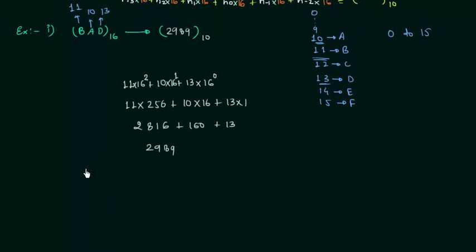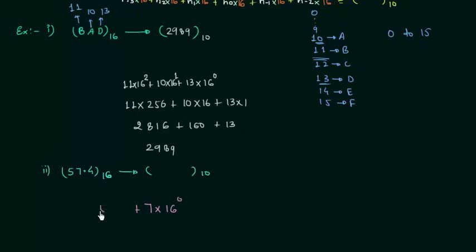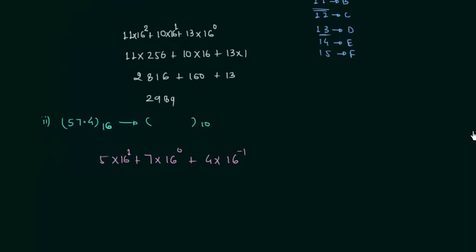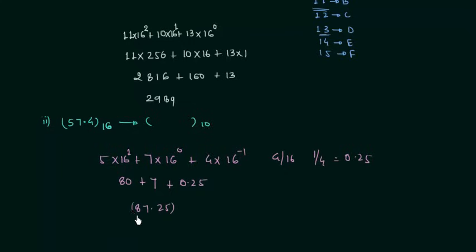Now for the second example. The number is 57.4 in hexadecimal, and we want the decimal equivalent. I will multiply 7 by 16 raised to power 0, plus 5 by 16 raised to power 1, plus 4 — the fractional part — multiplied by 16 raised to power minus 1. Solving: 5 times 16 is 80, 7 times 1 is 7, and 4 divided by 16 equals 0.25. So the answer is 87.25 in decimal.